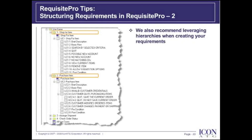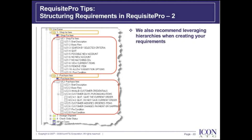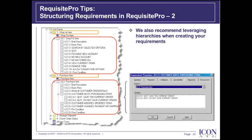We also recommend leveraging hierarchies when creating your requirements. On the left-hand side of this slide, within the Use Cases Requirement Type, I have introduced several packages. I have highlighted two of those packages — Shop For Item and Purchase Item — in orange. Within those packages, I have created hierarchies for my requirements, outlined in red.